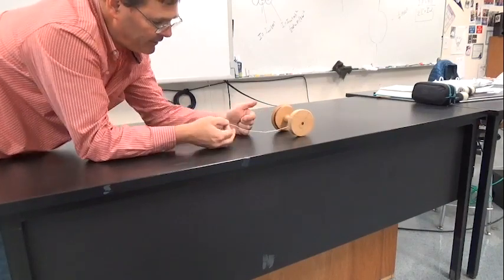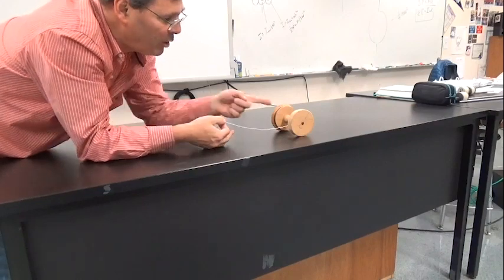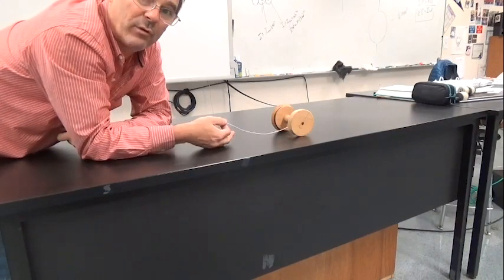If I pull on this string horizontal to the tabletop, which way will the wheel roll?